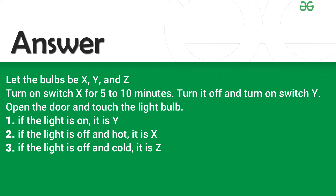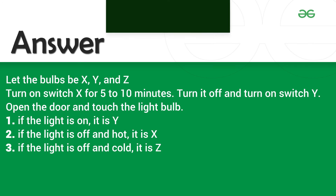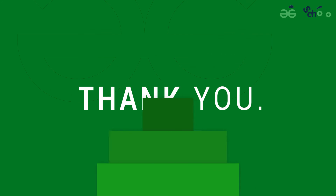1. If the light is on, it is Y. 2. If the light is off and hot, it is X. 3. If the light is off and cold, it is Z. Thank you.